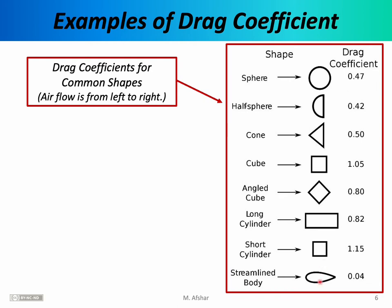The most aerodynamic shape in the table is the so-called streamlined body, which has a very low drag coefficient. The streamlined body is actually the cross-sectional shape of airplane wings — airplane wings in cross-section are designed to look like a streamlined body, because the goal is to minimize the resistive force of drag.